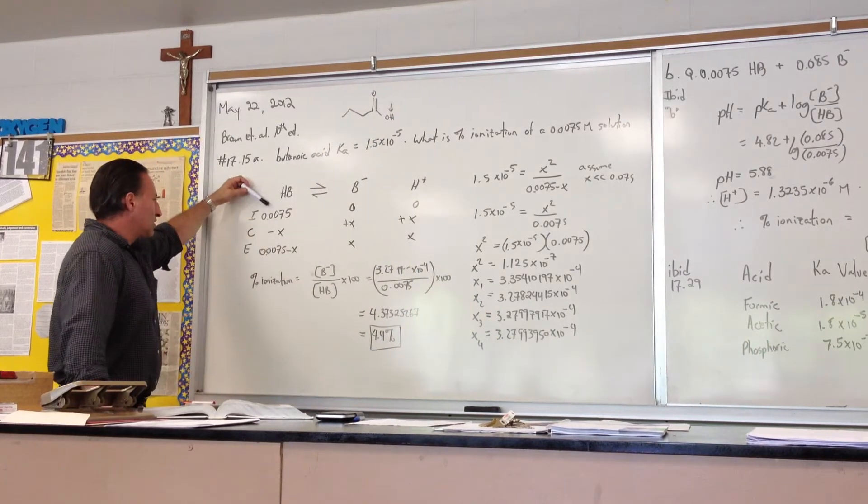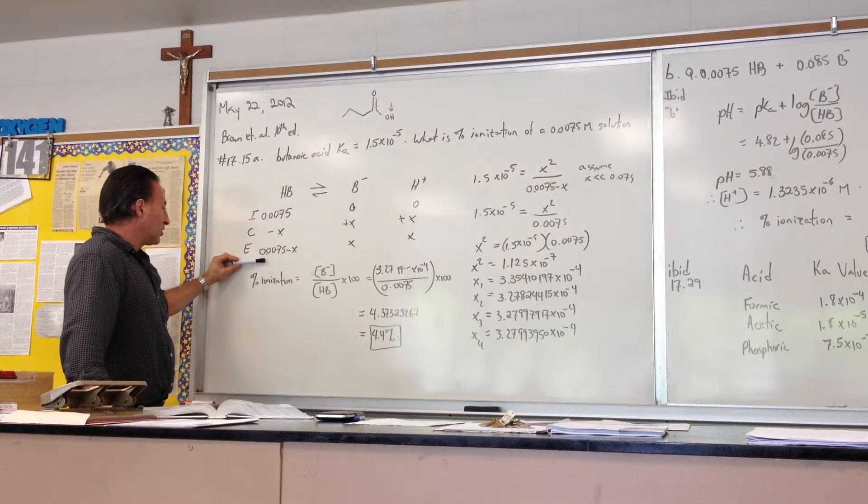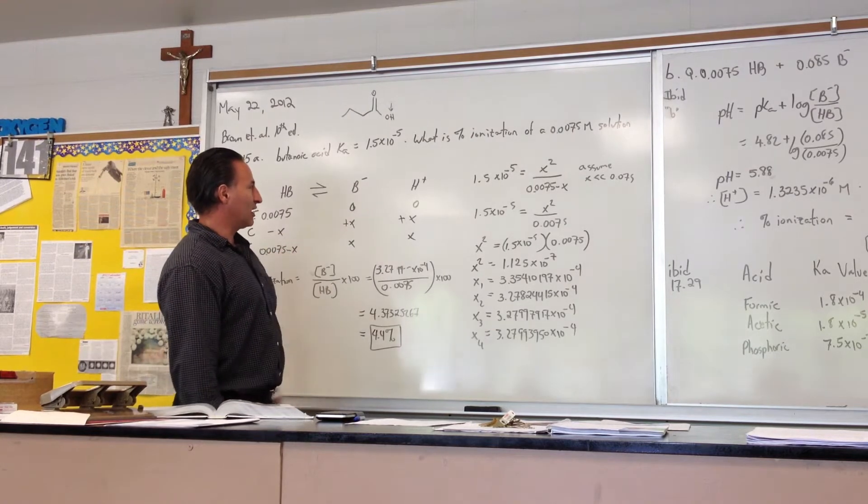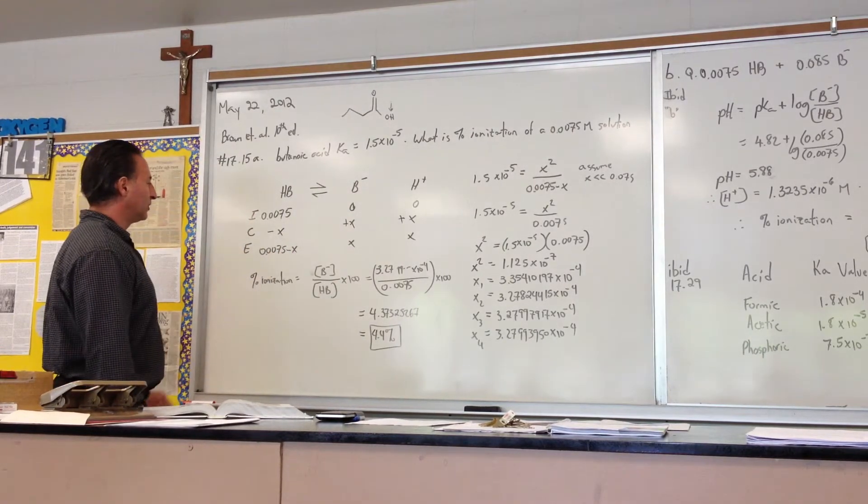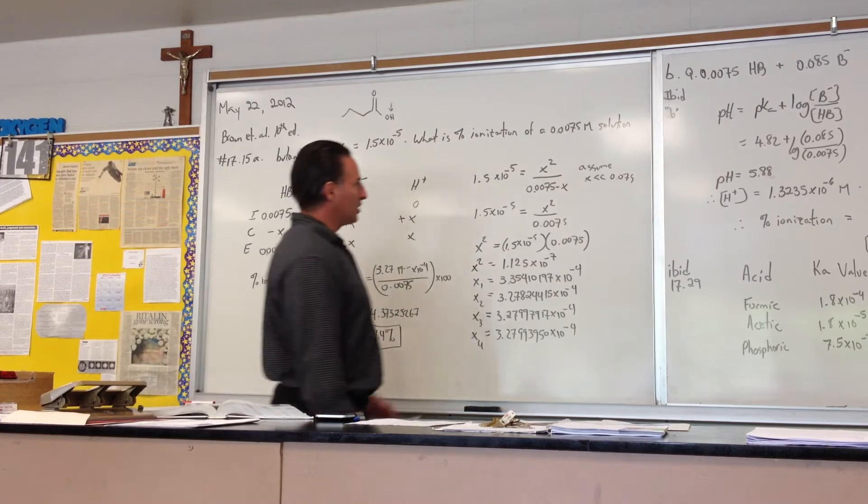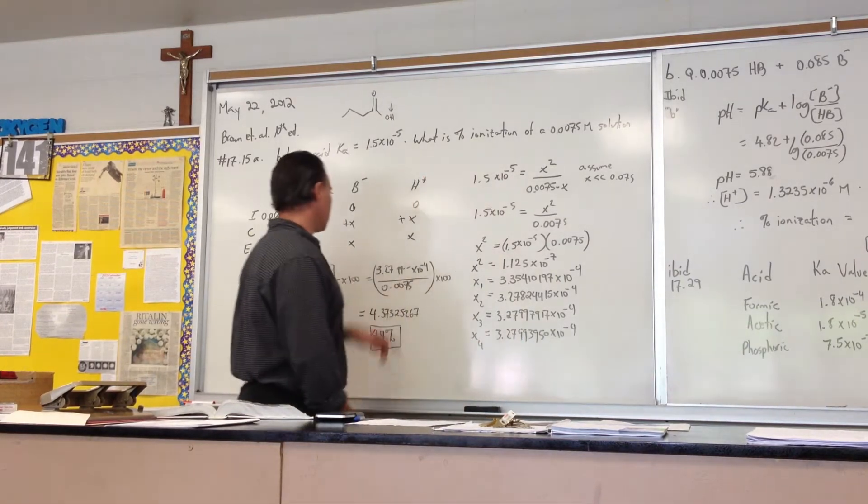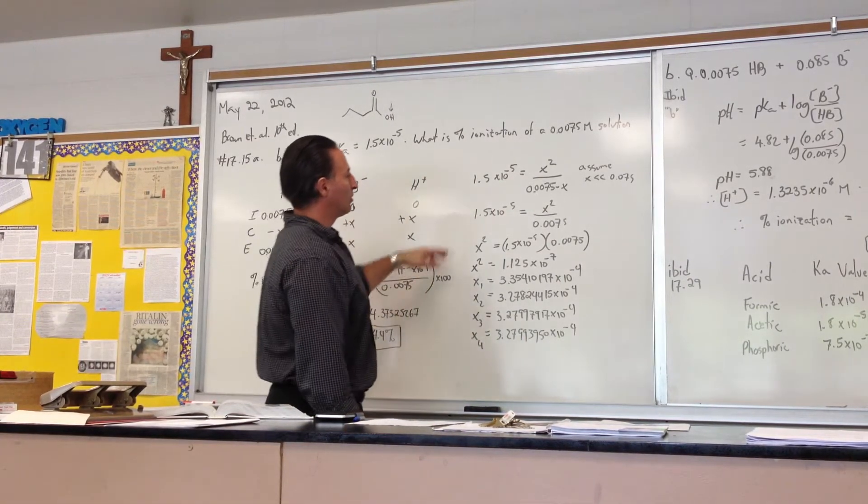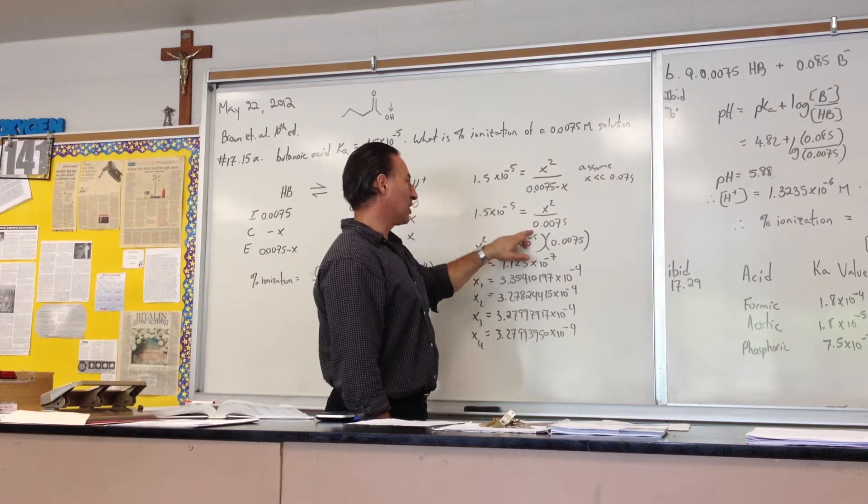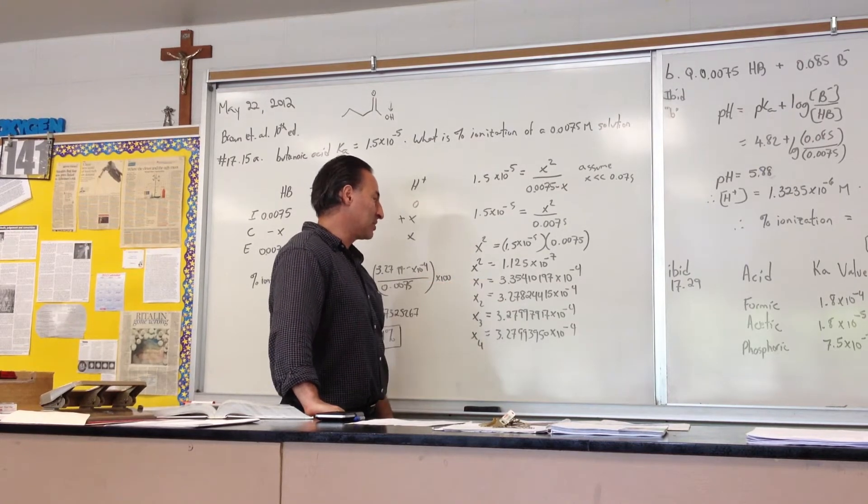At any rate, we have an initial concentration of 0.0075, an amount X dissociates, giving you an equilibrium concentration of 0.0075 minus X. X of the conjugate base appears, as well as X of the concentration of the hydronium cation. I did an approximation. I assumed that X is going to be a lot less than 0.0075 when I set up the equation. So it's products over reactants equals X squared over 0.0075. Because this value X is a very small number, I did this approximation, and for the first part of the calculation, I found out that X is equal to 3.35 times 10 to the minus 4.